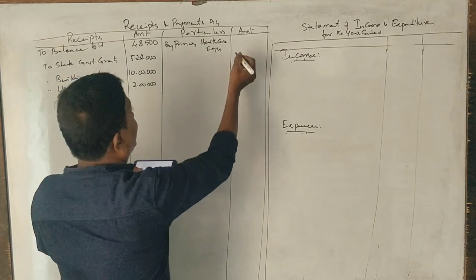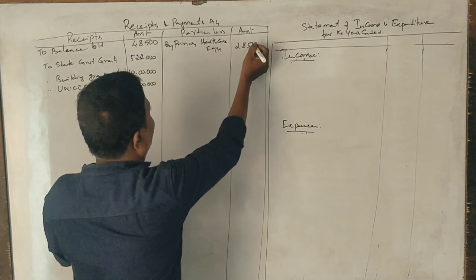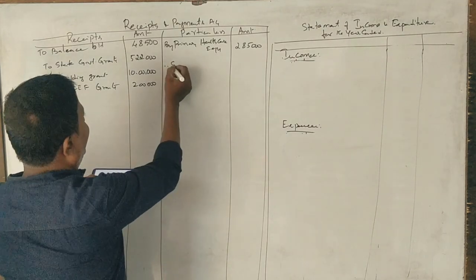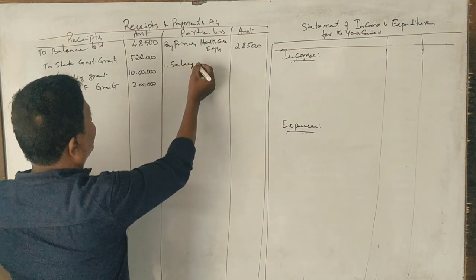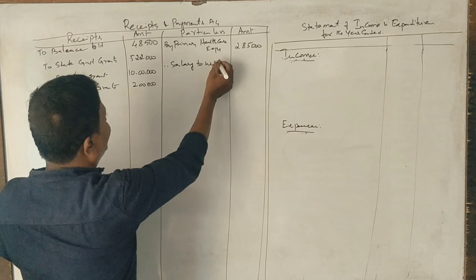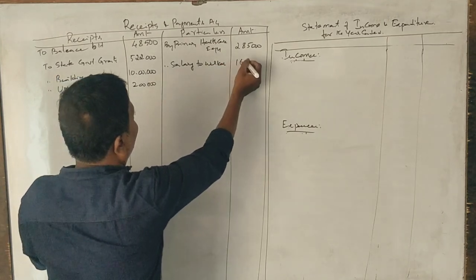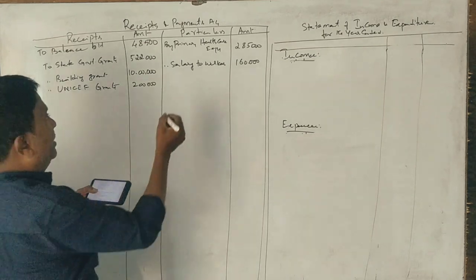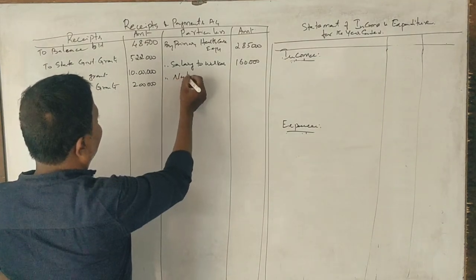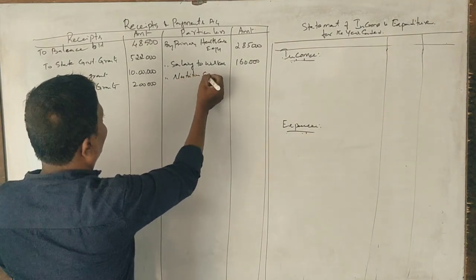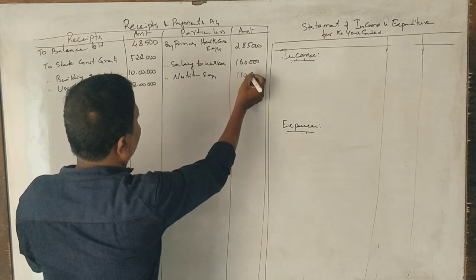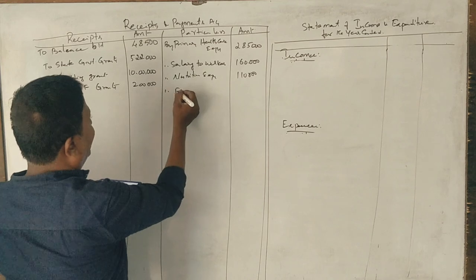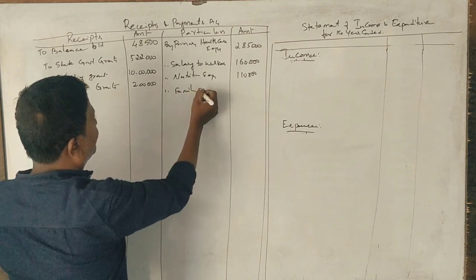2,2 lakhs. Next, salary to Anganwadi workers: 1,60,000. Next, nutrition expenses: 1,10,000. Next, family planning expenses: 1,80,000.